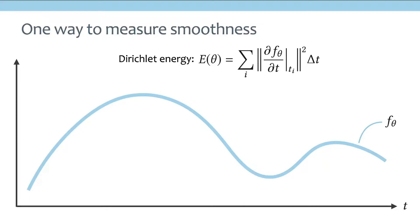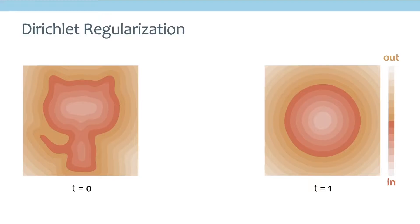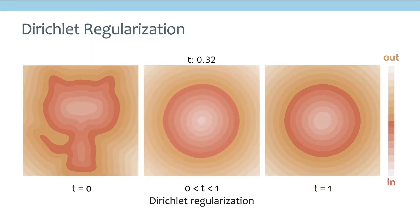For example, if we use piecewise constant discretization, this basically means that we can approximate this Dirichlet energy by sampling a bunch of time steps along t. And for each time step t_i, we compute the slope and then take the square of it and sum them together. And if we add that Dirichlet energy to the part of our loss function, this is the result we obtained.